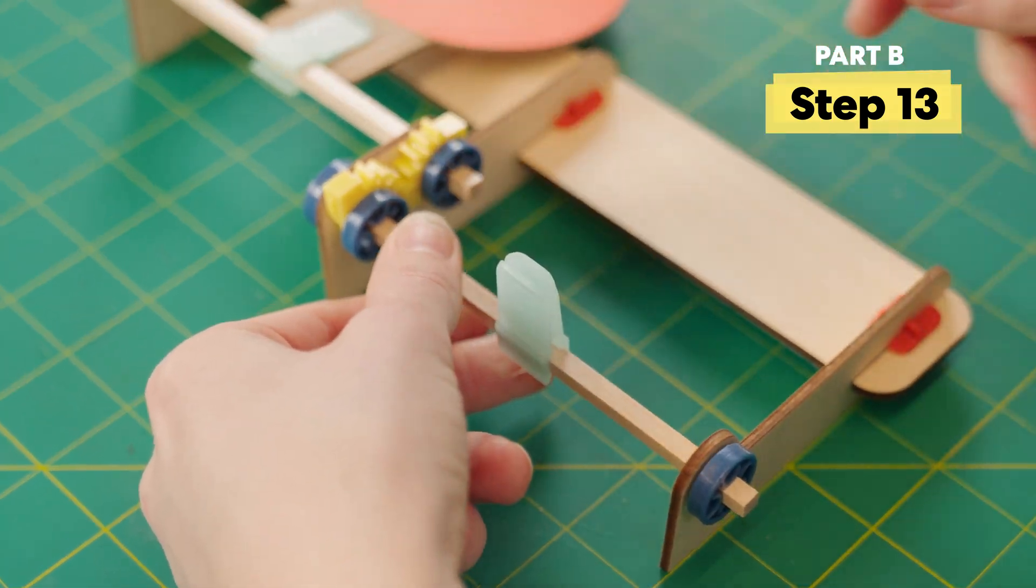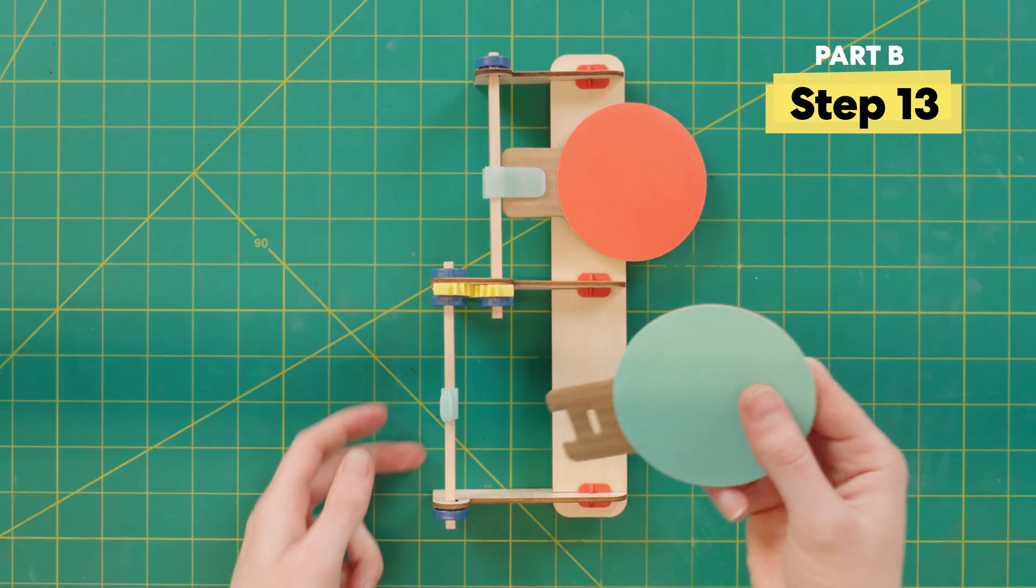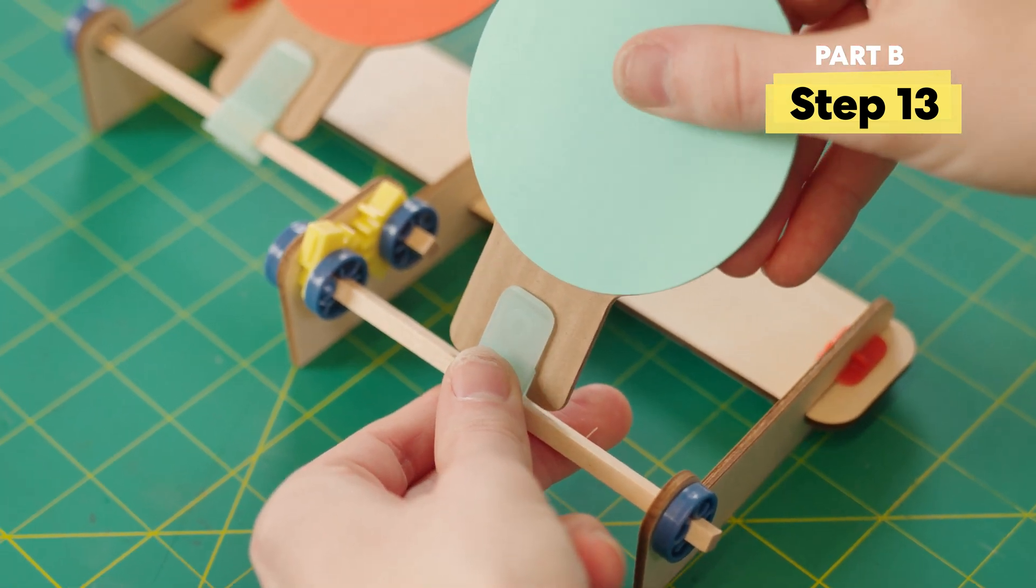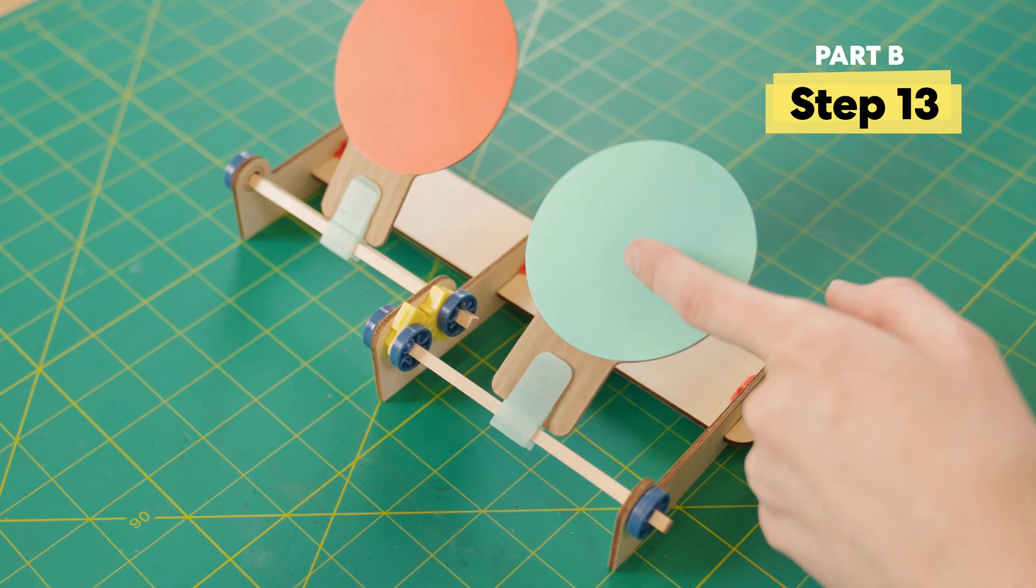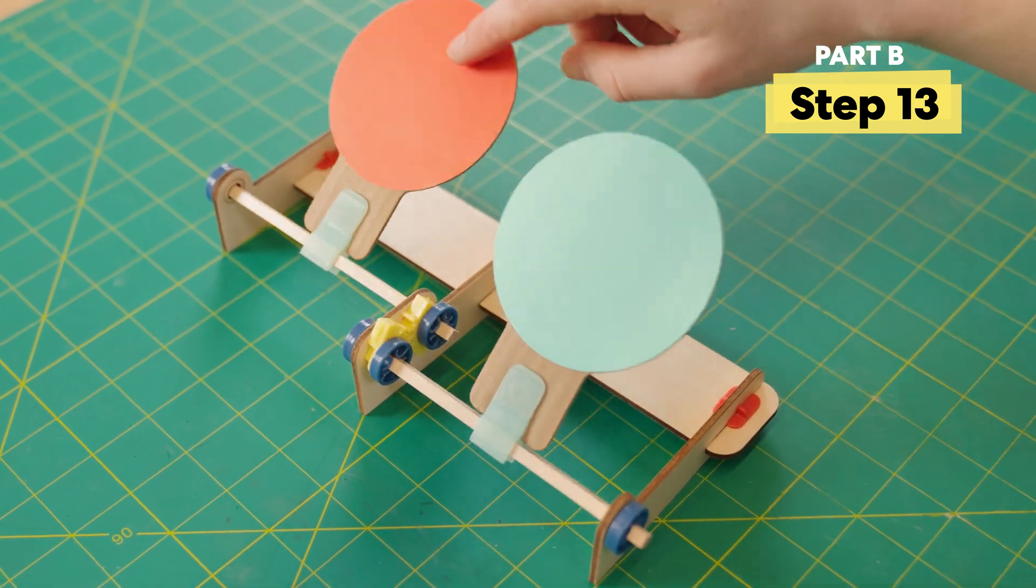Then, repeat to the other side. And then slide on your second target. Alright, so one target should be sticking up, and the other one should be facing ground. When you hit one target, the other one should pop up.